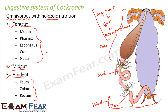Food intake happens through the mouth, and waste or undigested food exits through the anus. The entire stretch from mouth to anus is the digestive tract or alimentary canal. In cockroach, the alimentary canal is quite long, which is why it is distinctly divided into foregut, midgut, and hindgut.